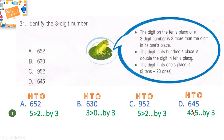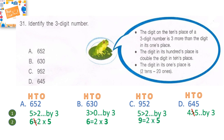Now let's look at condition two: the hundreds digit is double the tens digit. For option A: is 6 equal to two times 5? No, so option A is out. For option B: is 6 equal to two times 3? Yes! So option B holds. For option C: is 9 equal to two times 5? No, so option C is out. Our correct answer is option B — 630.